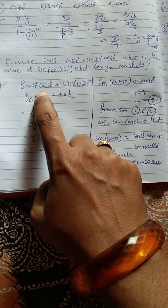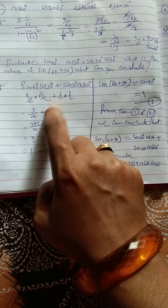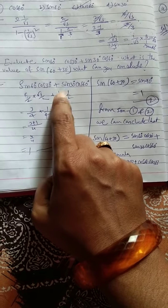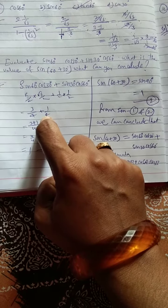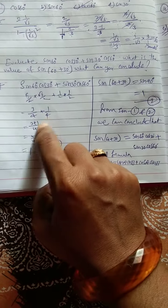Now root 3 into root 3, how to multiply? Then you will get 3. The denominator also you have to multiply, 2 into 2 is 4. Plus 1 into 1 is 1, 2 into 2 is 4.